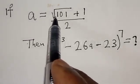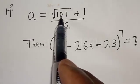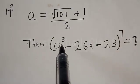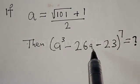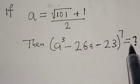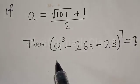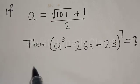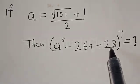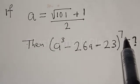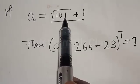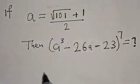If a is equal to square root of 101 plus 1 over 2, then a raised to power 3 minus 26a minus 23, all raised to power 7, is equal to what? Hi everyone, welcome to my class. In this class, we want to find the value of a raised to power 3 minus 26a minus 23, all raised to power 7. So a is given to be square root of 101 plus 1 over 2.